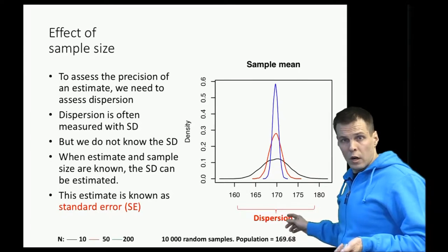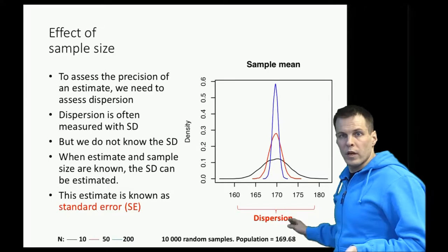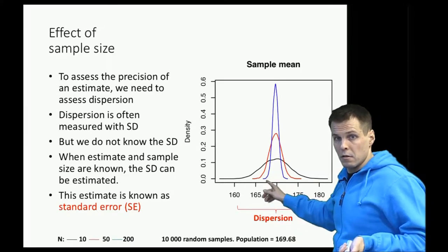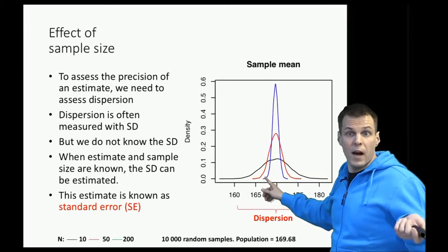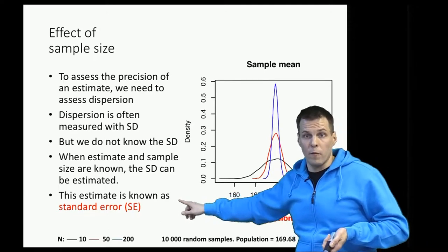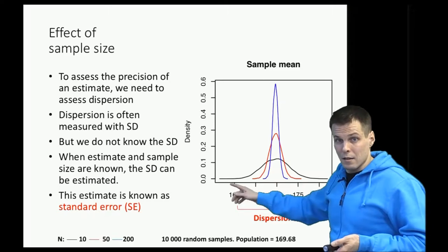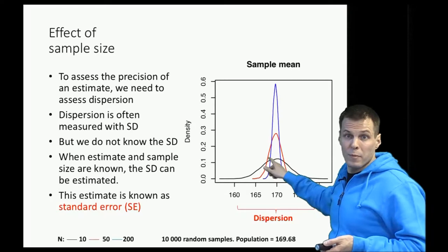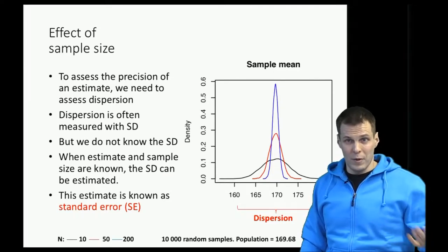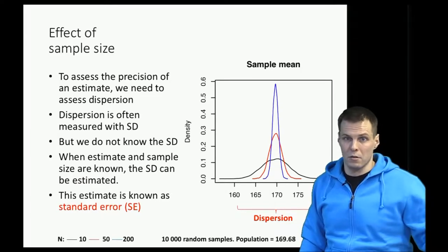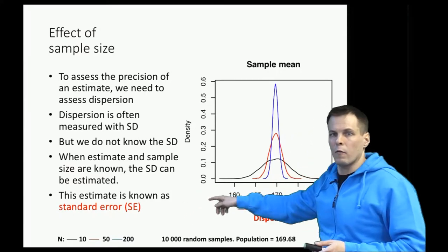We have two statistics that quantify this dispersion: standard deviation and variance. For estimates we prefer standard deviation because it is in the same metric as the estimator — so if the estimate is 160 centimeters, the standard error is plus or minus five centimeters. Standard error is an estimate of what the standard deviation of repeated samples from the same population would be. We can't practically do 10,000 replications of a poll, so we use standard error as an estimate of that standard deviation.